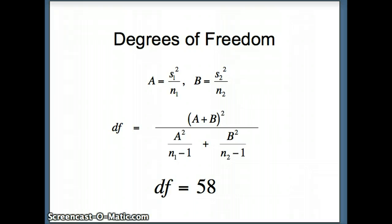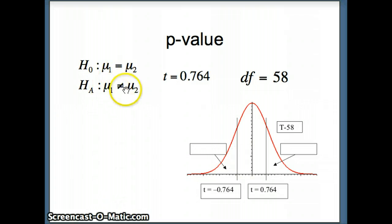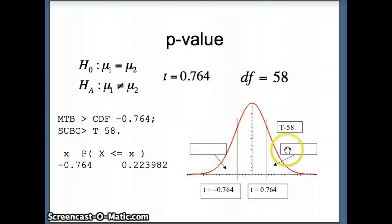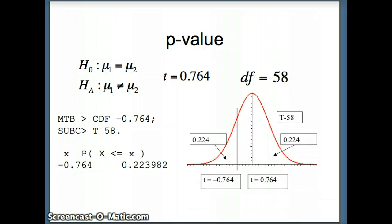Now that we have the test statistic and degrees of freedom, it's time to determine the p-value. Two-tailed test, t is 0.764, degrees of freedom 58. I need the area to the right of 0.764 and to the left of negative 0.764. We're going to ask Minitab to find this area: cdf negative 0.764 with a t of 58 degrees of freedom. The relatively large number of 0.224 comes back, so there's 0.224 in this tail and 0.224 in that tail. Our p-value is the sum of those two areas, so our p-value is about 0.448.